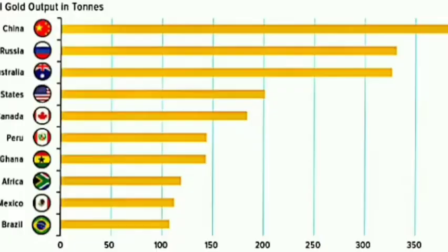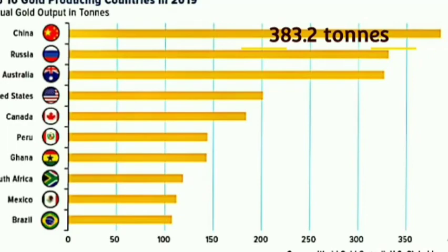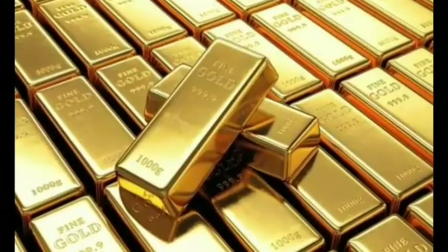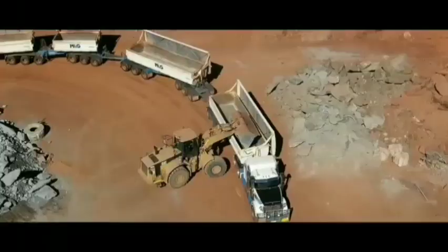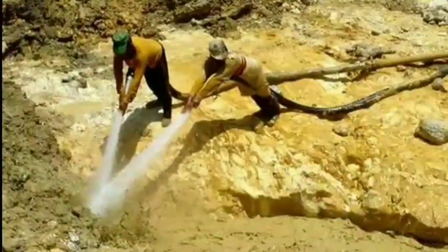Gold Mining. In the year 2019, China topped as the largest gold producer with an annual gold output of 383.2 tons, while Brazil ranked as a top 10 largest gold producer with an annual gold output of 106.9 tons. Gold costs a great amount of money; however, its process of extraction through mining ravaged landscapes, contaminated water supplies, and contributed to the destruction of vital ecosystems due to the cyanide, mercury, and other toxic substances it released.